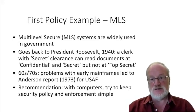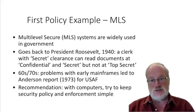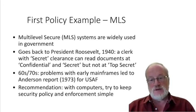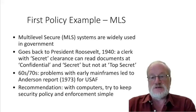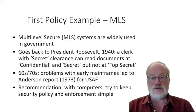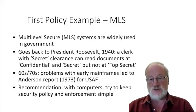The first policy example is the multi-level secure system, widely used in government to defend large caches of intelligence data such as wiretap data collected by the NSA and GCHQ. The doctrine goes back to President Roosevelt in 1940 as America prepared to join World War II. The basic idea is that a clerk with a secret clearance can read documents at confidential and secret levels but not at a higher level such as top secret.